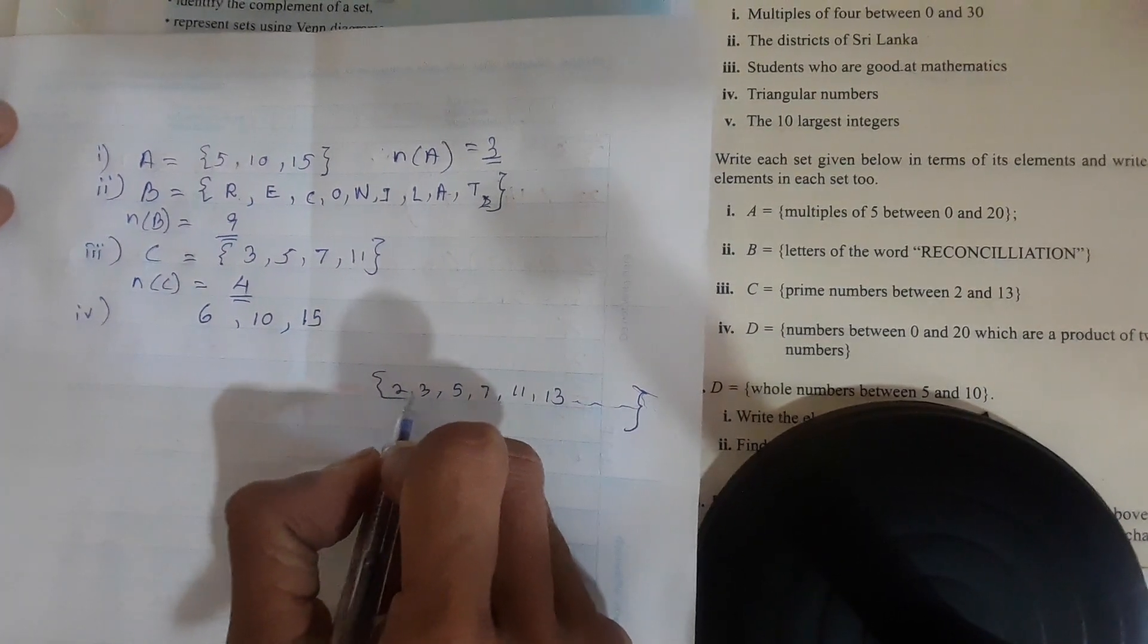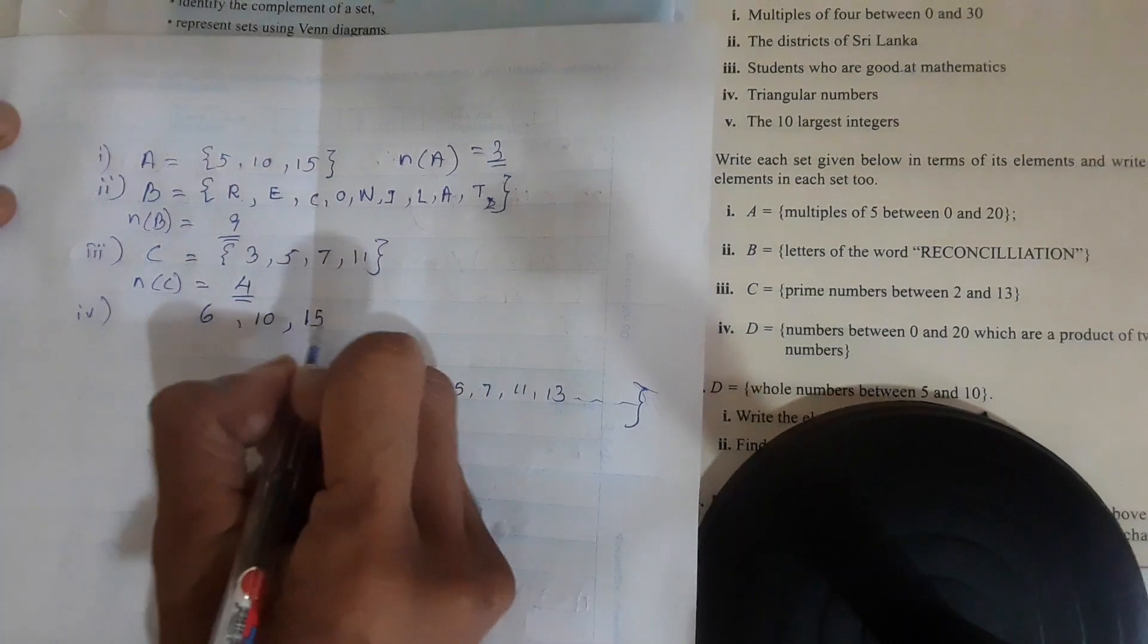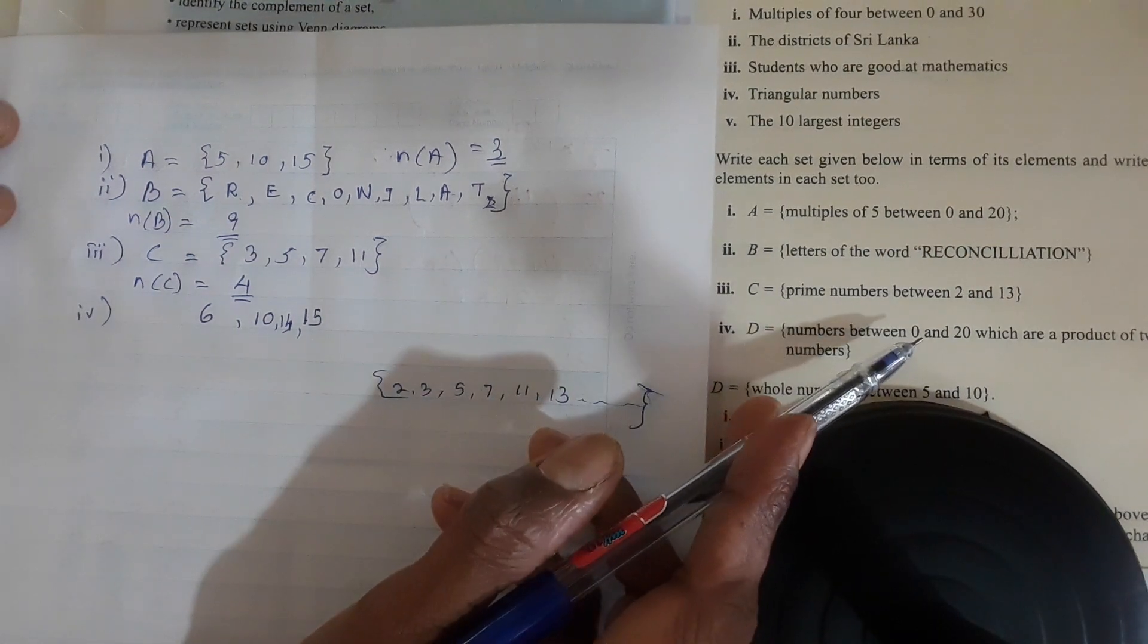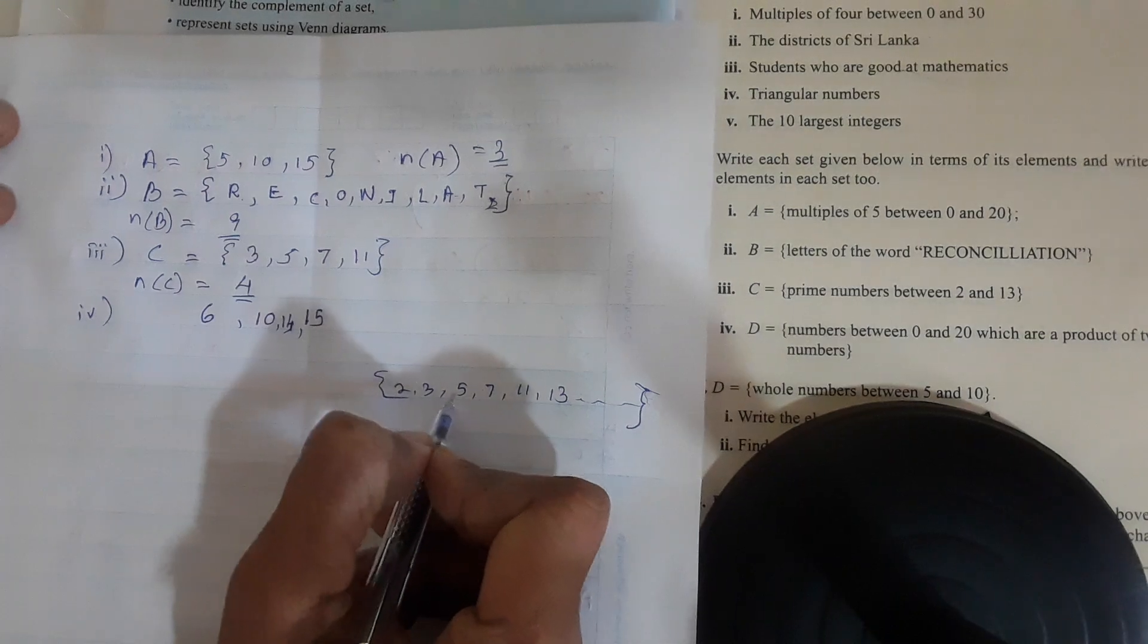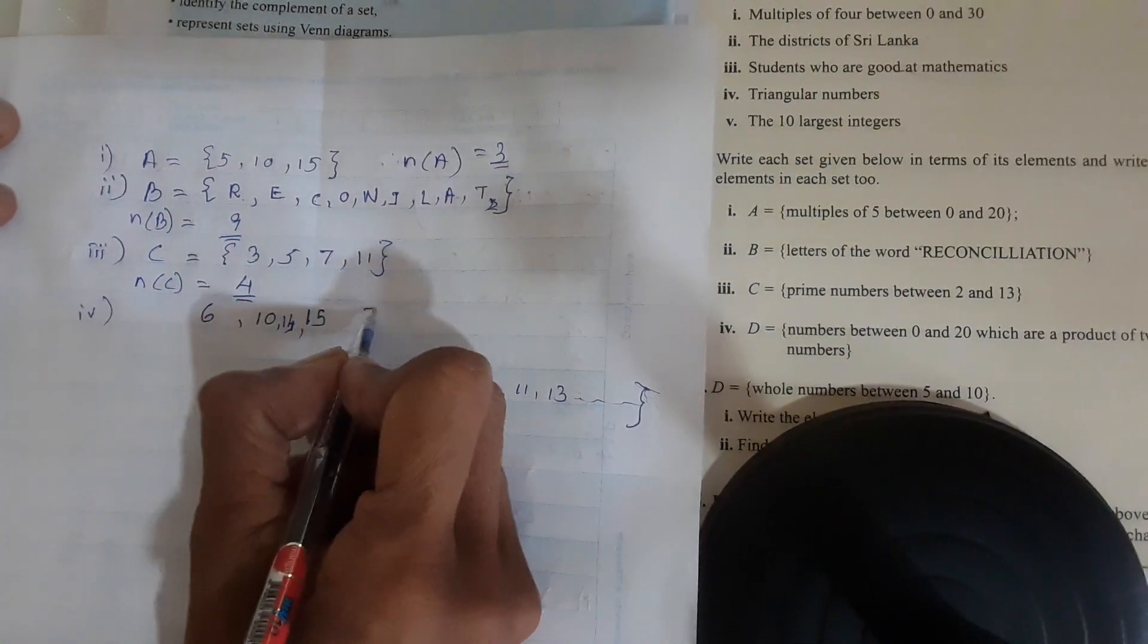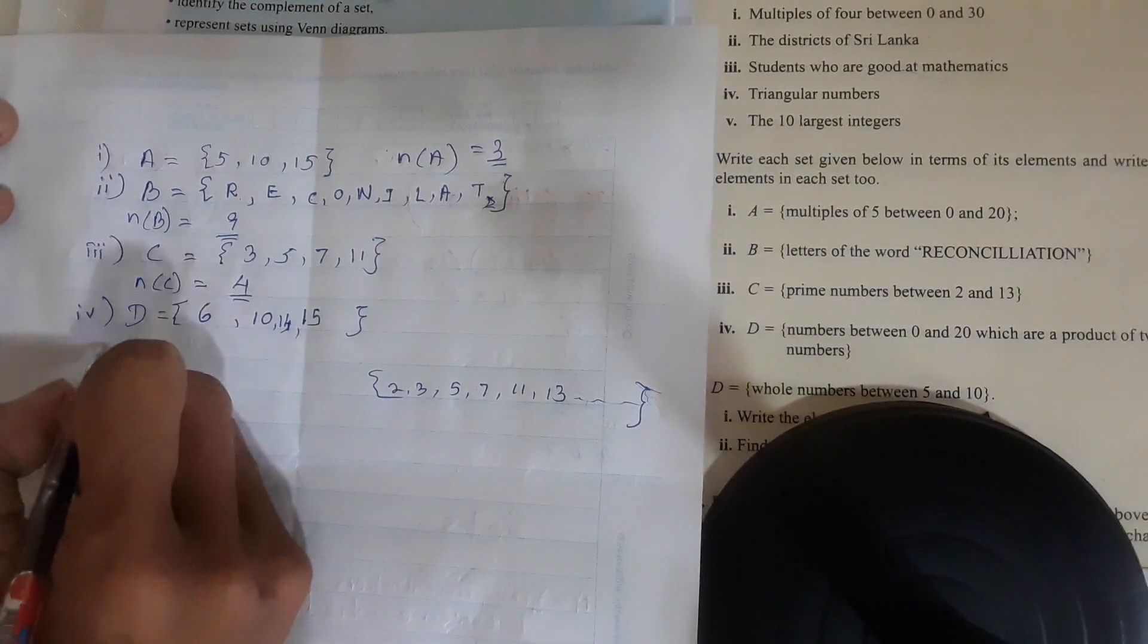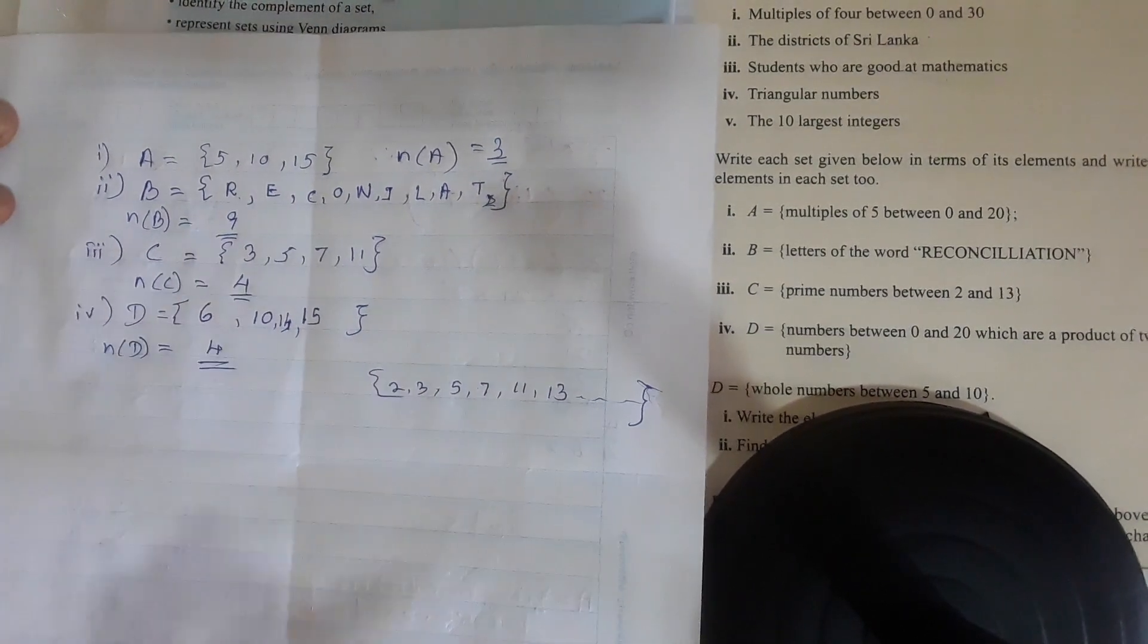2 times 3 is 6. 2 times 5 is 10. 2 times 7 is 14. 2 times 11 is 22, but 22 is not between 0 and 20. 3 times 5 is 15. Then 3 times 7 is 21, we can't write it. Set D. Number of set D: 4.